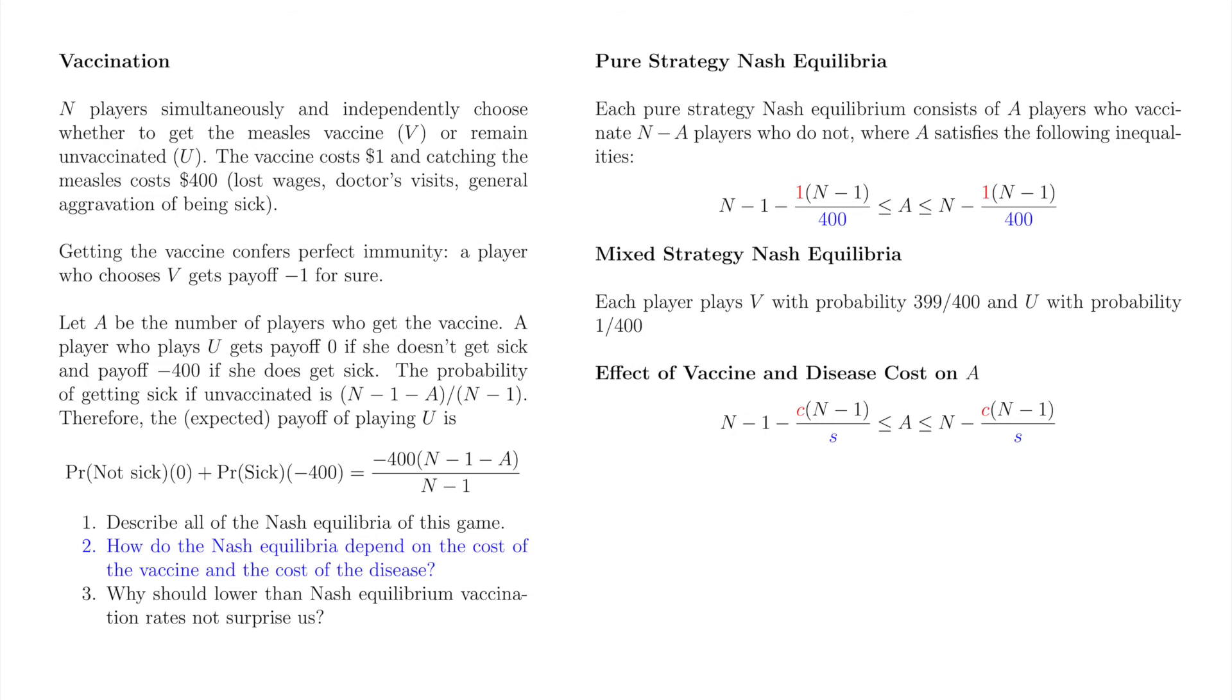Let C and S denote the cost of the vaccine and the sickness respectively. Instead of folding 1 and 400 into our derivation of the pure strategy Nash equilibrium, we could hold them separate as shown in red and blue in the top line on the right. Replacing 1 and 400 with C and S in the bottom line, we see that the model bears out our intuition. A, the number of players who vaccinate in pure strategy Nash equilibrium, decreases as the ratio of C to S increases.